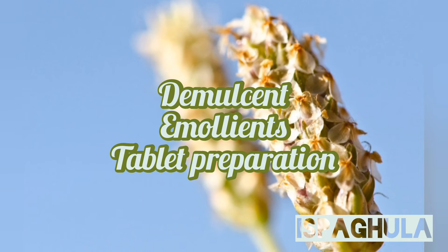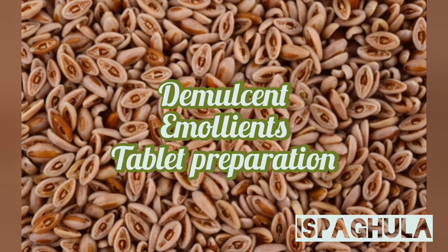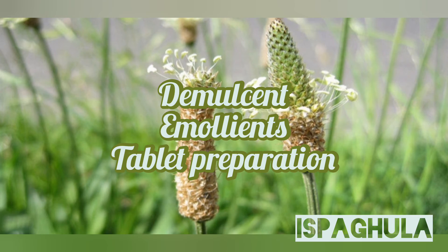Coming to the uses: espagula seeds are mainly used as demulcent agents. Demulcents are agents which are used to form a soothing or protective coating of the alimentary tract. Another use of espagula is as an emollient — emollients are agents which form a protective layer giving a soothing effect on the skin. The third use is they are mainly used in the treatment of constipation, bacillary dysenteries, and amoebic diseases.